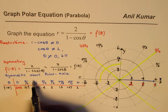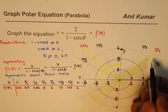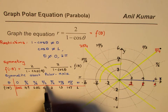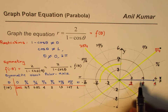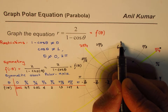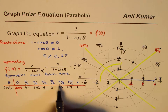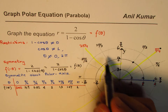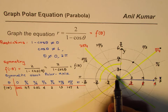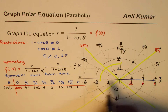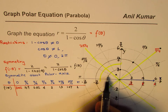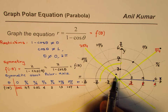Now let's plot the points. At π/4, the value is 6.82 — so approximately at the 6 circle along the π/4 direction. At π/3 the value is 4, so that point is on the 4 circle. At π/2 the value is 2, so on the 2 circle along the π/2 direction. At 2π/3 the value is 1.3, so between 0 and 2 along that angle.